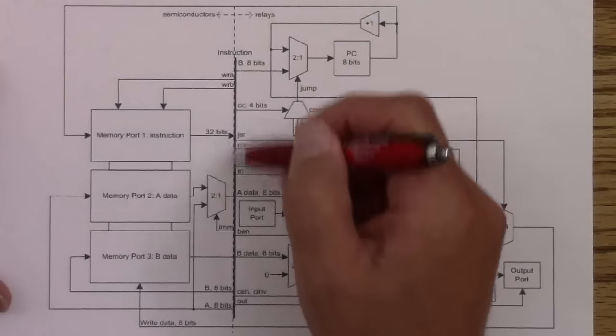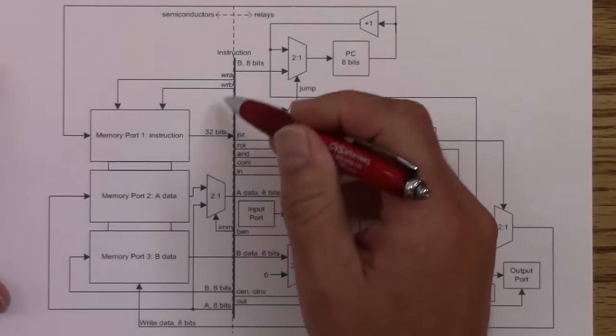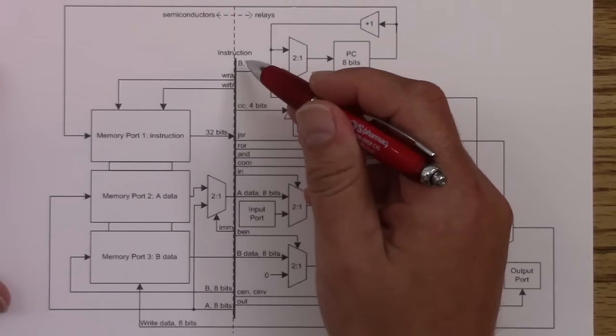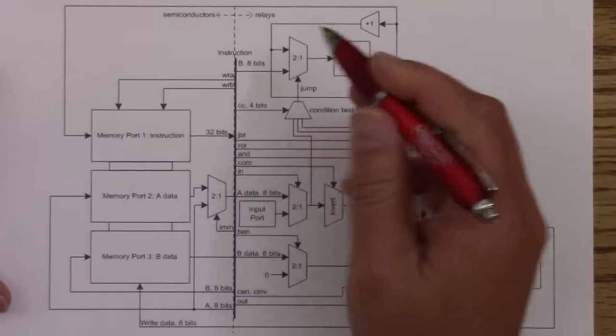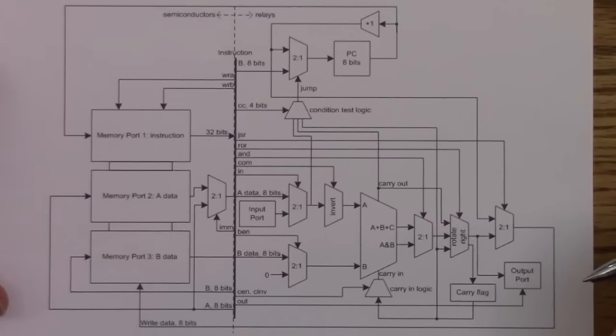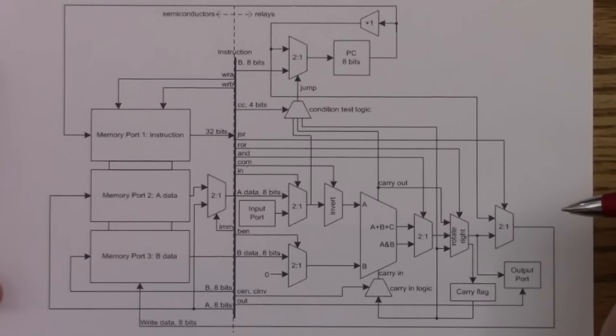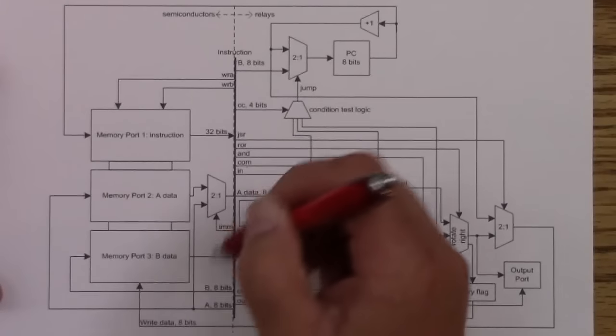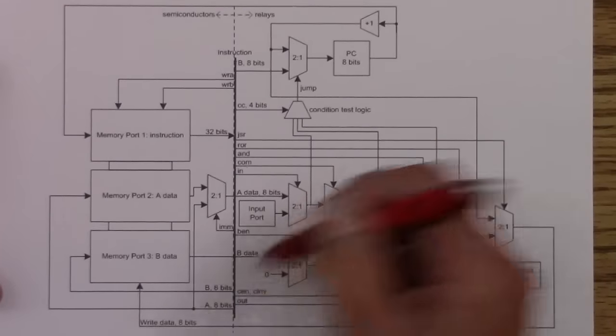This three-port memory is one of the ways we use to reduce the relay count, because you'll notice that there's no instruction register. The instruction register is really on the semiconductor side. But we're already cheating by using semiconductors for memory, so we might as well make the most of it, and this is one of the ways to do it.